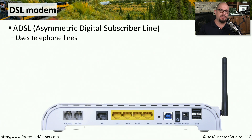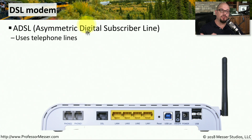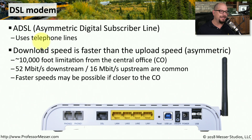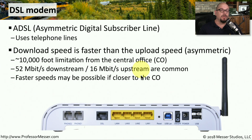DSL is a viable competitor to cable modem networks for both home and business. Instead of using cable television wire, DSL uses the same wire traditionally used for telephones. DSL stands for Digital Subscriber Line, sometimes called asymmetric digital subscriber line — asymmetric because download speed is faster than upload speed. A key challenge with DSL is a distance limitation between the telephone company's central office and your home, with a maximum of around 10,000 feet. DSL speeds generally range around 52 megabits per second downstream and 16 megabits per second upstream, with faster speeds possible closer to the central office.